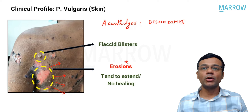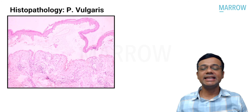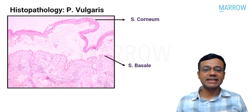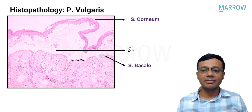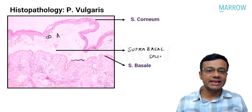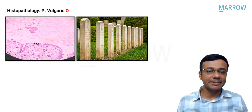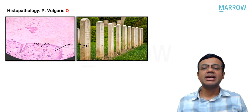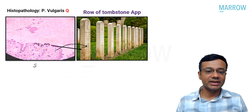When we look at the histopathology of pemphigus vulgaris, we can spot the skin layers: stratum corneum and stratum basale. Just above the stratum basale, there is a split called the suprabasal split. You can also see rounded acantholytic cells. The basal layer shows characteristic gaps between cells, referred to as the row of tombstone appearance, because the stratum basale remains intact.